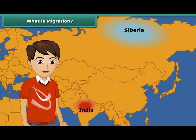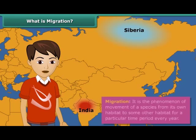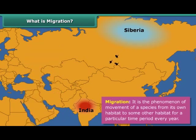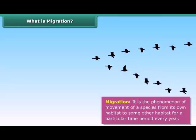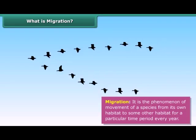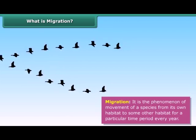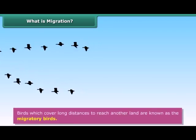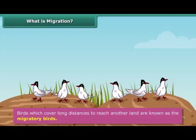Let us learn what the term migration means. Migration is the phenomenon of movement of a species from its own habitat to some other habitat, for a particular time period every year, for a specific purpose like breeding or avoiding climatic conditions.